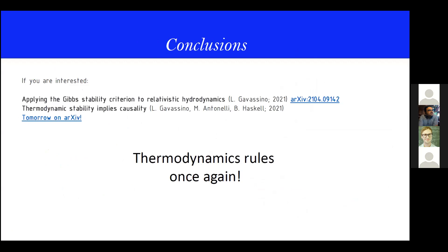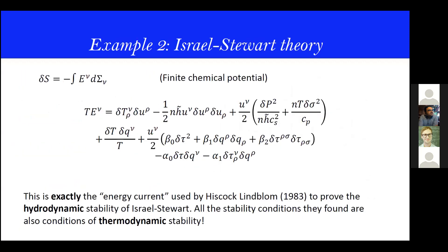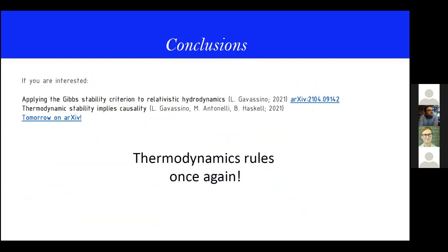In conclusion, to sum up: thermodynamics rules, once again — in the sense that we have a thermodynamic criterion that tells us a lot about the stability properties of a system. And I would like to conclude that tomorrow there will be a new paper which will prove that close to equilibrium, thermodynamic stability as I have presented it also implies causality. This is actually not a surprise, because you see that you also get this condition of causality in the case of the perfect fluid when you compute stability. So with this, I would close and thank you for your attention.